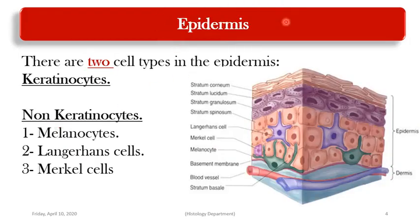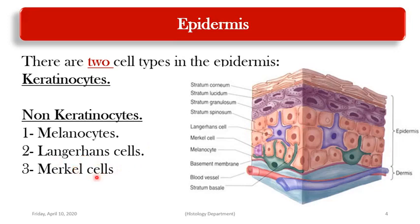The epidermis is formed of stratified squamous keratinized epithelium. It is composed of two categories of cells: first, the keratinocyte, and second, the non-keratinocyte. Non-keratinocytes include the melanocyte, the Langerhans cell, and the Merkel cell.